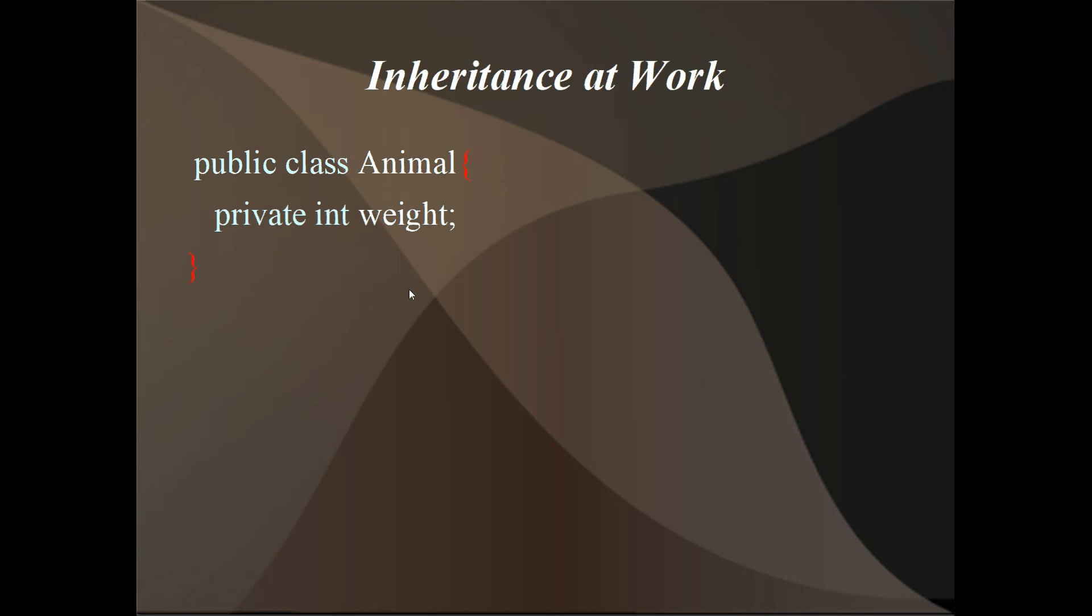Now, here's where things get a little bit different. Now we have the public class animal again, but we have a private int wait. So if we come back here, and we have public class dog extends animal, and then we try to set wait equal to 28, it won't compile. Because private members such as variables and methods aren't inherited by the subclass.